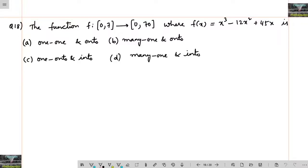The function f from [0,7] to [0,70] where f(x) = x³ - 12x² + 45x. Let us check by the derivative principle.